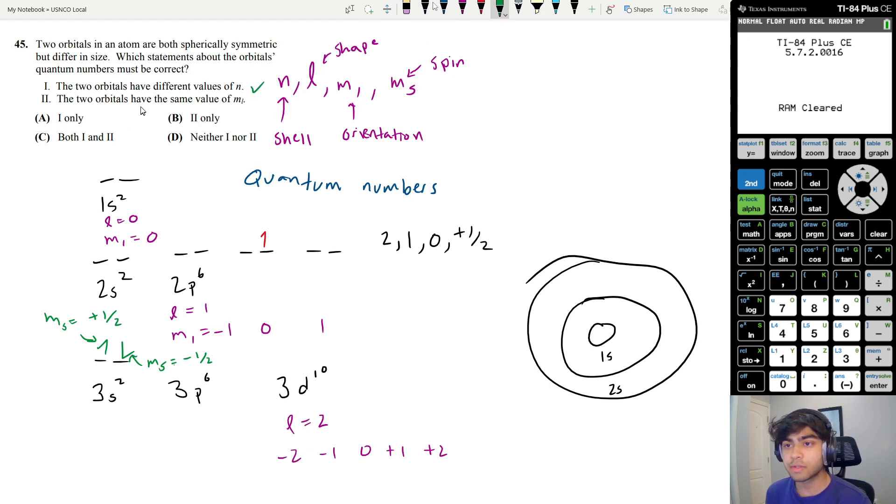Statement two says that the two orbitals have the same value of ml. These are both s orbitals, so they all have an ml value of zero. So they are also going to have the same value of ml. Therefore, our answer is answer choice C.